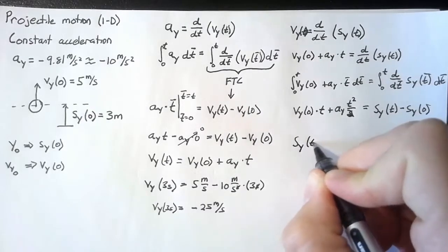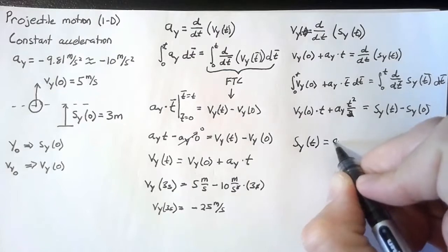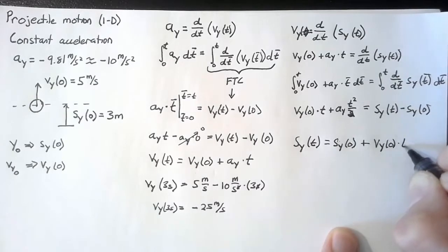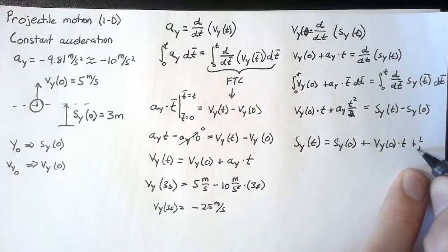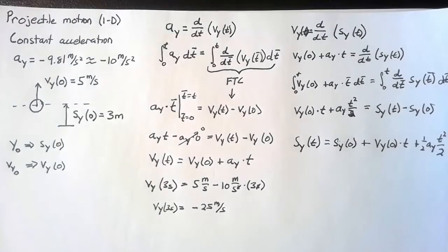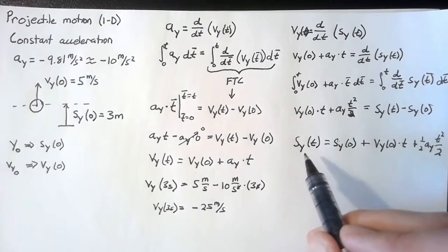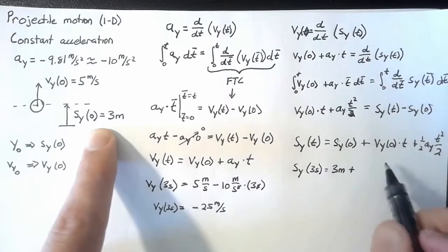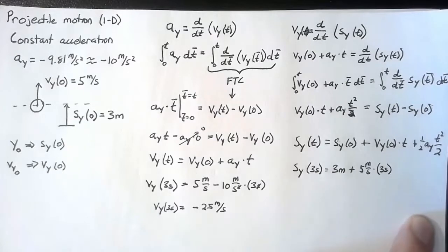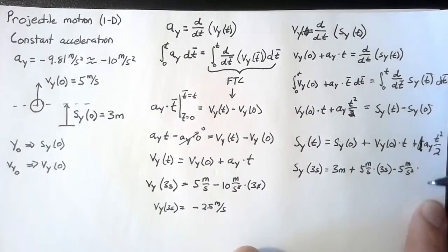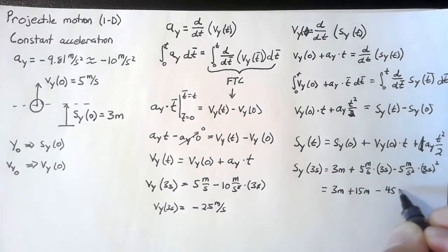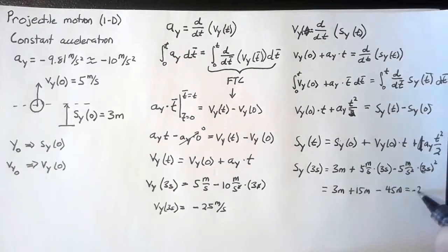So s_y at time t is going to be our initial position plus our velocity at time 0 multiplied by t plus 1/2 times our acceleration times t². So let's go ahead and plug in 3 seconds for our time and find the position in the y direction at that time. Our initial y position is 3 meters. Our initial velocity is again 5 m/s. And our acceleration is -10 m/s². But we have a half, so that's just going to be 5. So we end up with 3 meters plus 15 meters minus 45 meters, which after just a little bit of math is -27 meters.